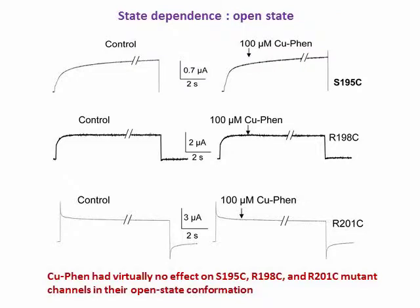We explored the state dependence of disulfide bond formation using copper phenanthroline, which catalyzes the covalent disulfide cross-linking of closely located cysteines. We initially examined the tendency of each mutant to form covalent bonds after copper phenanthroline application at depolarizing voltages, reflecting the channel open state. We found that copper phenanthroline had virtually no effect on the mutant channels in their open state conformation.